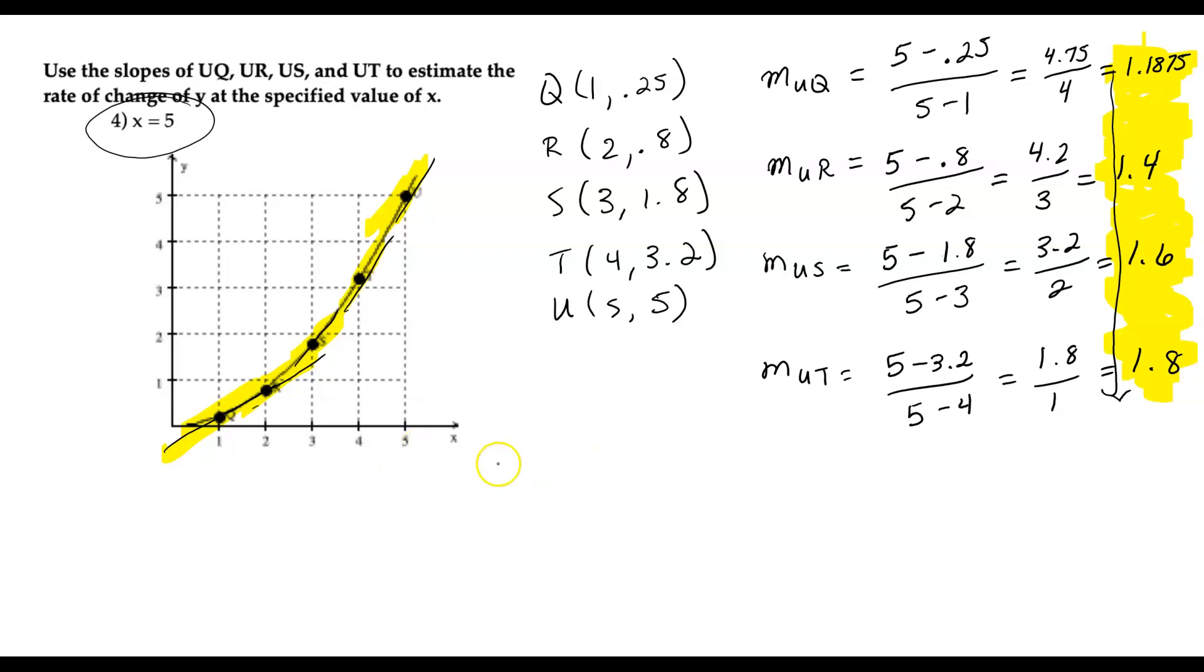The slope is approaching 2 at x equals 5. That's what it looks like. So what I'm thinking here is, the slope is approaching 2 at x equals 5. Yeah, that's probably about right.